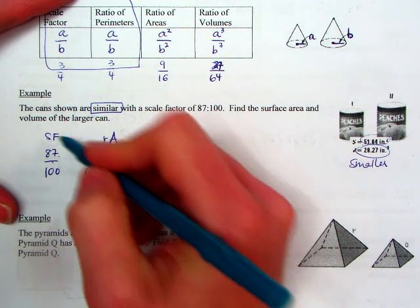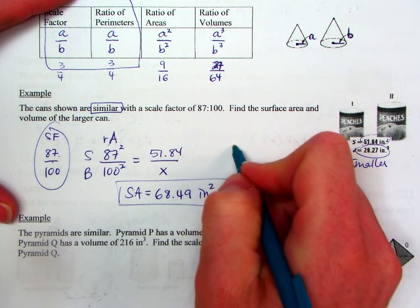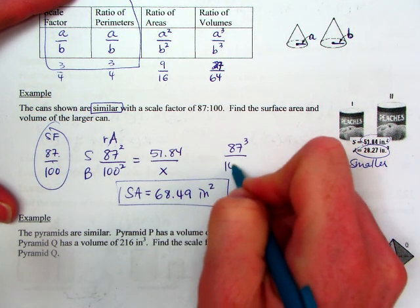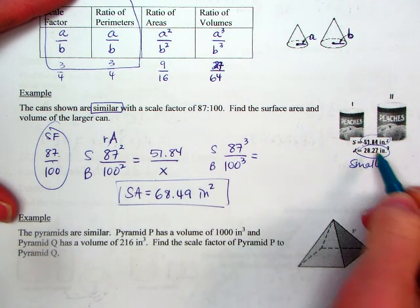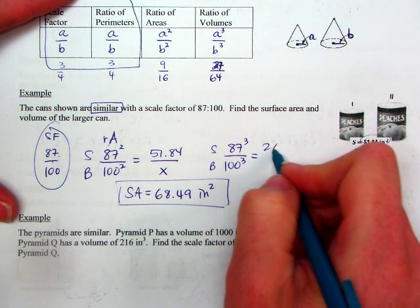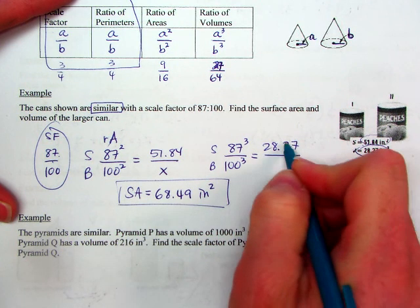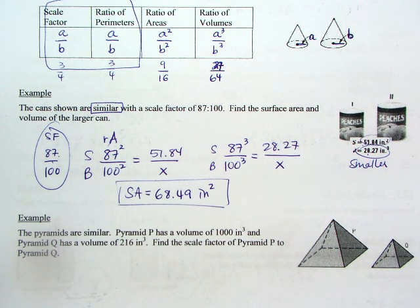To do volumes, we're going to take our scale factor and cube it. So 87 cubed over 100 cubed. Still small to big. So I'm going to take my small 28.27. Put that on top. X goes on the bottom because we're finding the volume of the larger can. So 28.27 times 100 cubed, and we're going to divide by 87 cubed.